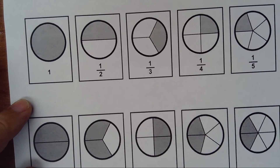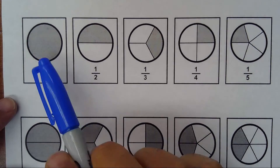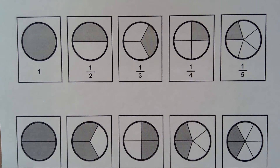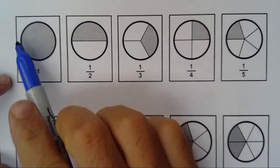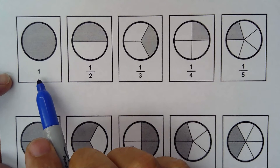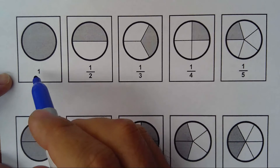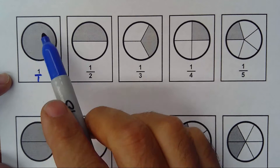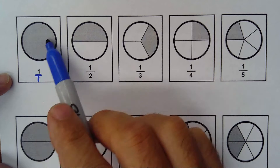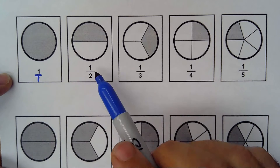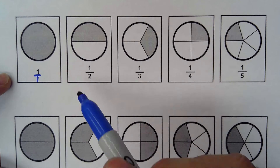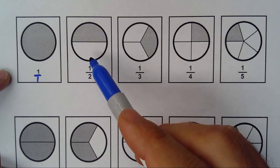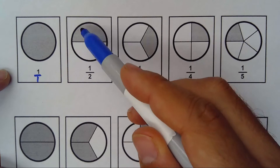Here I have a whole one, and written as a fraction it will be one over one — from one piece, I take one. The shaded part is what we count. One half means from two parts I take one, which is this part here.